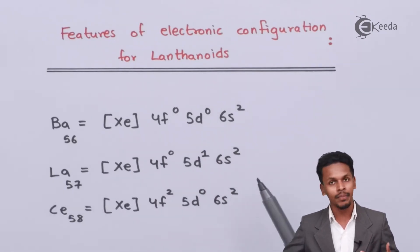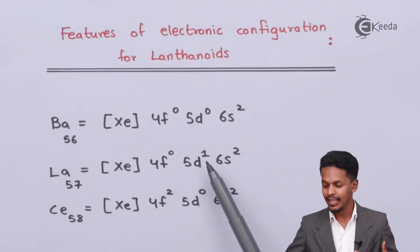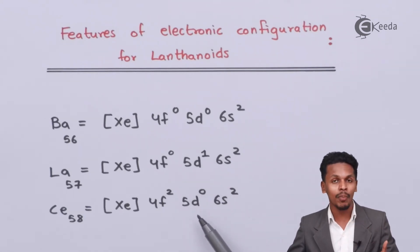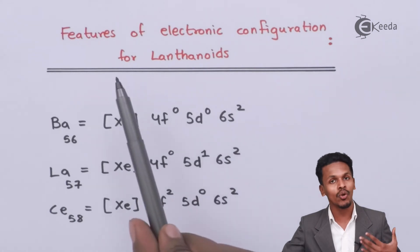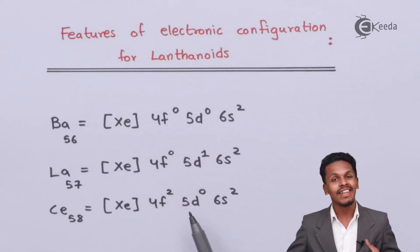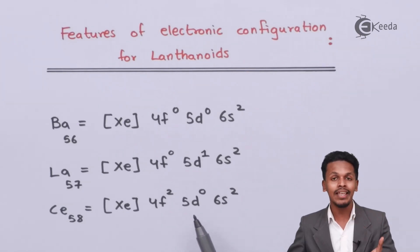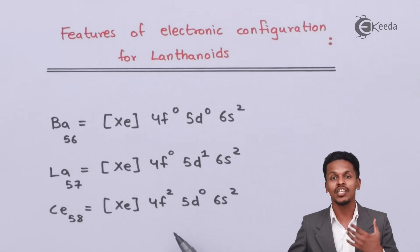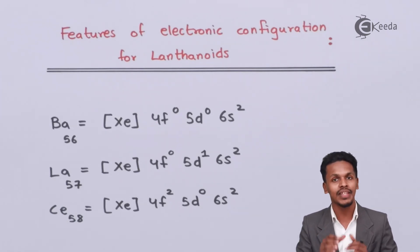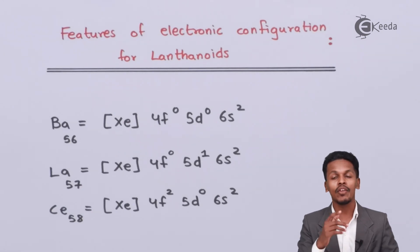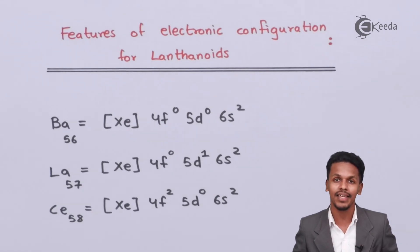The key feature of lanthanoid electronic configuration is that most lanthanoids have an empty d orbital. The exceptions are gadolinium and lutetium, which have at least one electron in the d orbital due to the stability they acquire. Thank you for watching — I hope you've understood the features of electronic configuration for lanthanoids.